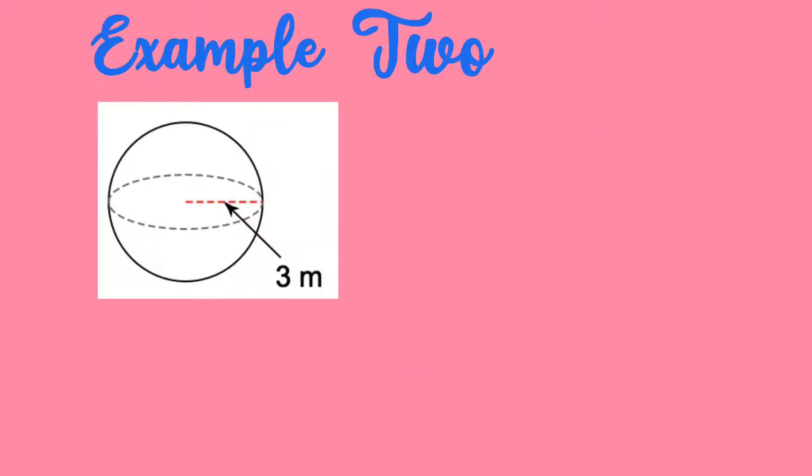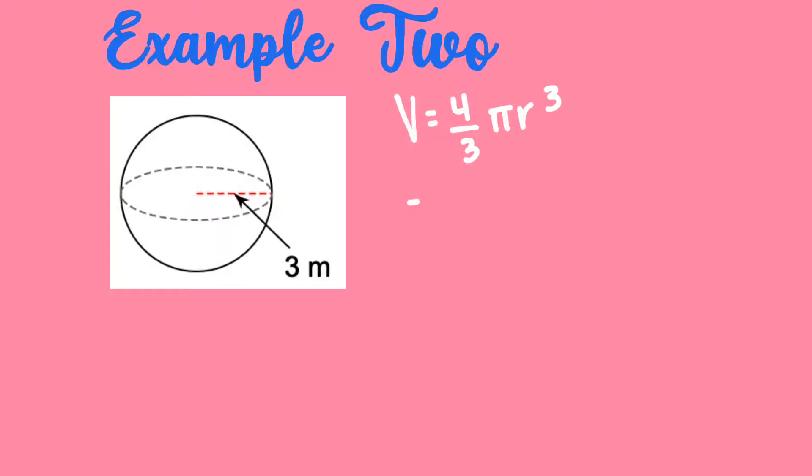So example two, volume is equal to four thirds pi r cubed. Here I give you the radius. You should see that your radius is three. So four thirds and pi stay the same. But I now have three cubed, which remember, this is three times three times three. So three times three gives me nine. I drop down that third times three right here. And nine times three gives me 27. So I now know that three cubed is 27.